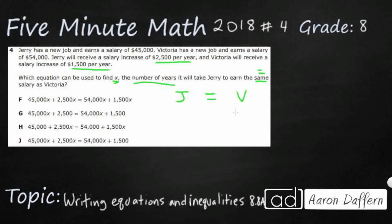So what we know is that they have different starting points. Jerry's got a starting point of $45,000. So that's his starting point. And then I've got to read that second sentence. I guess I can kind of put this over here. Victoria's got a starting point of $54,000.